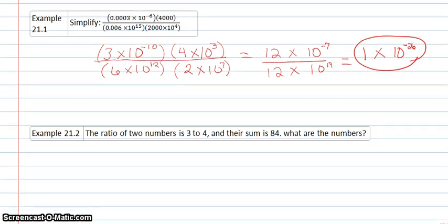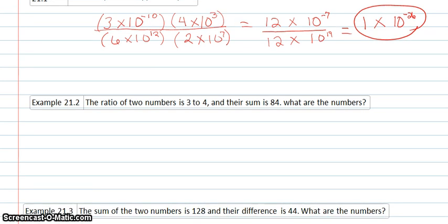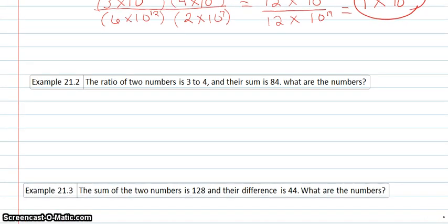So on our next example, we're trying to find 2 different numbers, and it tells us that the ratio of 2 numbers is 3 to 4, and their sum is 84. What are the numbers?